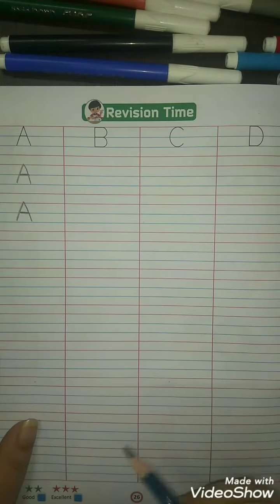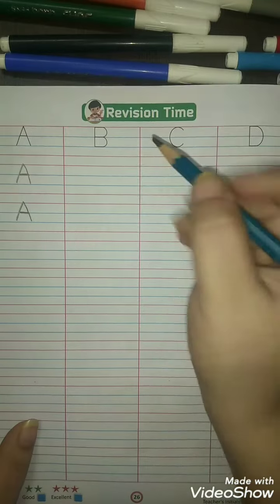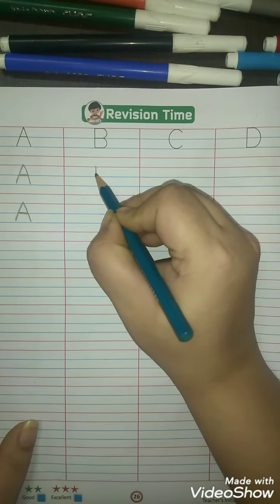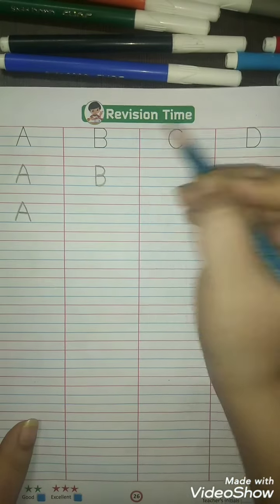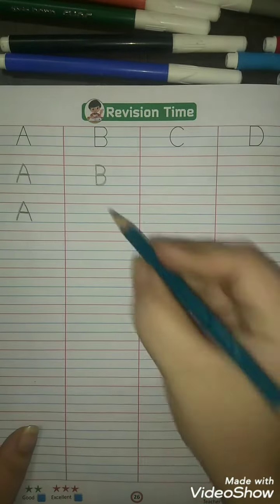B, B for ball. So make a standing line, curve, and make another curve. B, B for ball.